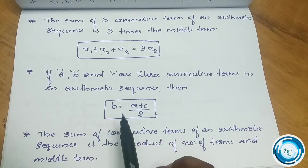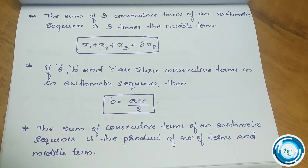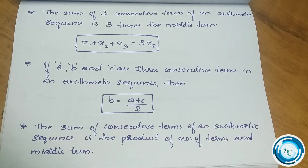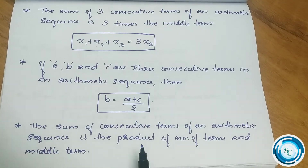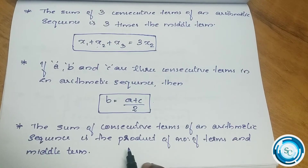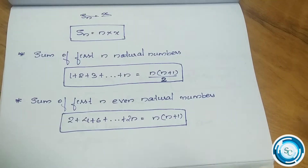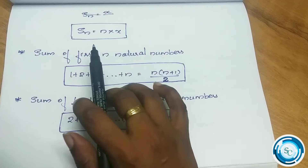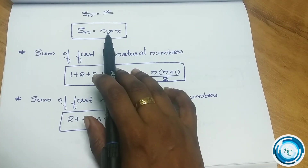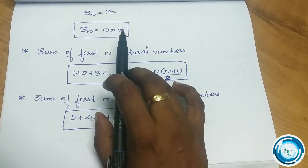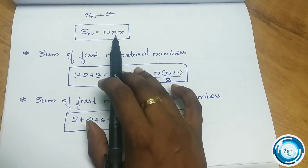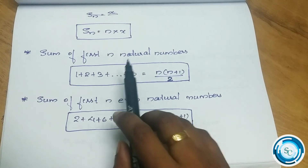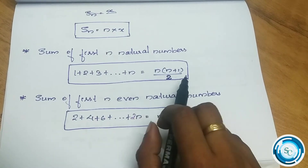The sum of consecutive terms of an arithmetic sequence is the product of the number of terms and the middle term. That is, Sn equals n into the middle term. For example, for 5 terms, n equals 5, and S5 equals 5 into the middle term.